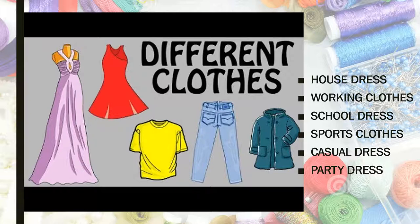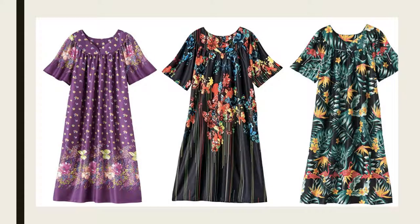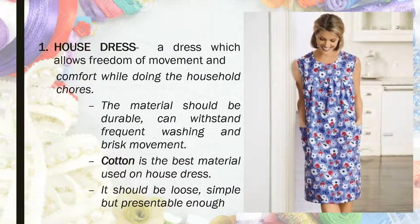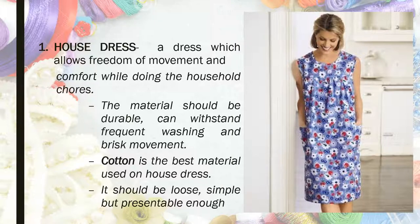Starting with the first one — what do you think is the kind of clothing illustrated here? Great job! Those are house dresses. A house dress is a kind of clothing which allows freedom of movement and comfort while doing household chores. The material should be durable because you are wearing it daily, washable, and able to withstand wrist movement. The best material to be used for a house dress is cotton, and it should be loose and simple but presentable enough.